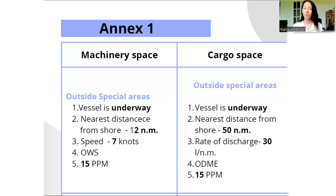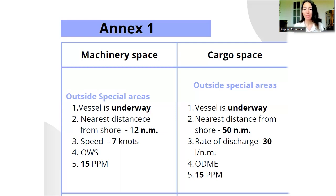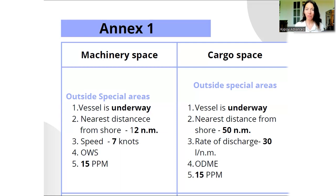Now for cargo space. Unlike machinery space where requirements are the same inside and outside special areas, for cargo space the requirements differ. Outside special areas: vessel is underway, distance from shore is 50 nautical miles, rate of discharge is 30 liters per nautical mile, and the vessel must be equipped with ODME — oil discharge monitoring equipment. The 15 ppm limit still applies. Most importantly, inside special areas we do not discharge any cargo residues — no oily water from cargo space may be discharged inside special areas.